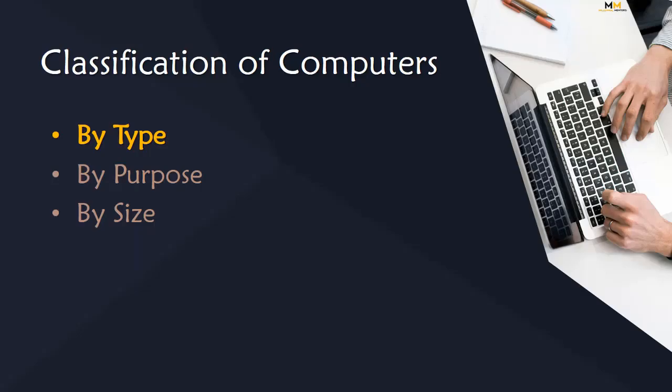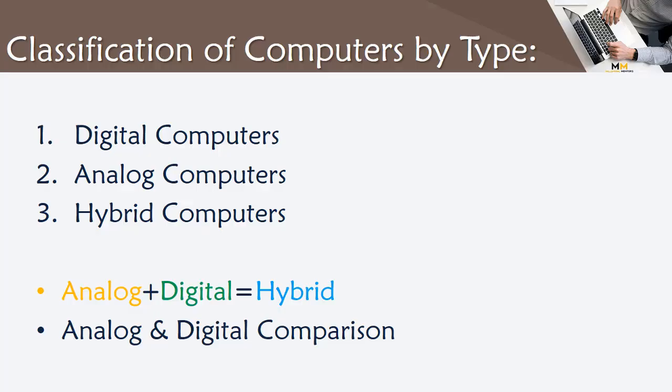Classification of computers by type. There are three types of computers: Digital Computers, Analog Computers, and Hybrid Computers.